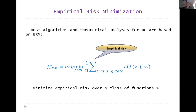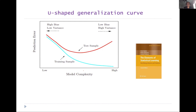Most algorithms and analyses are based on empirical risk minimization (ERM). In ERM, you take a class of functions H and try to find the function which minimizes the loss function over the training data. The procedure usually has an algorithmic element — typically a gradient descent type of method. The key aspect of this is actually the choice of H. The traditional view gives rise to the so-called U-shaped generalization curve.